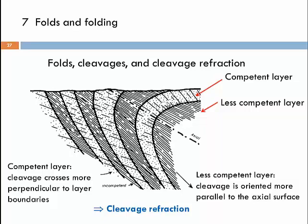Cleavage refraction is an important term and is restricted essentially to upper crustal rocks that have not seen very high temperatures of metamorphism, because high temperature reduces competence contrast between layers. In high-grade metamorphic rocks, a quartzite would be more or less as soft as a shale. The competence contrast between different lithologies decreases with increasing metamorphic temperature. Cleavage refraction requires competence contrast, and is strongest in upper greenschist to lower amphibolite facies.